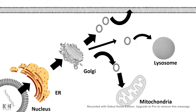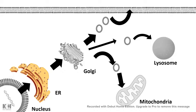Inside the endoplasmic reticulum there are two categories of proteins. One category is proteins destined for the Golgi warehouse, and the other category are maintenance proteins — the proteins that fold incoming proteins in the ER. These are called ER resident proteins. Think of them as the machines inside a factory; the machines used in production should not go to the warehouse.